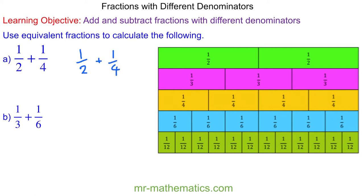When we add fractions with different denominators, we need to use a common denominator. In this case, we're going to use the denominator of four, because four is the lowest common multiple of each denominator.